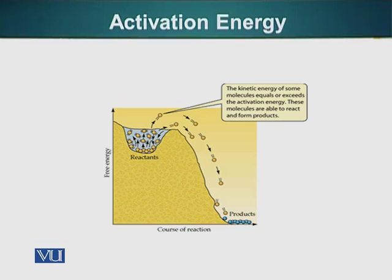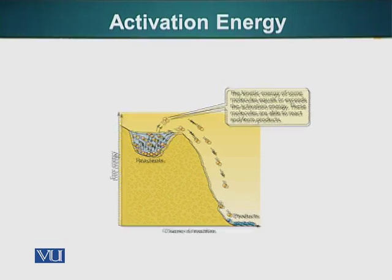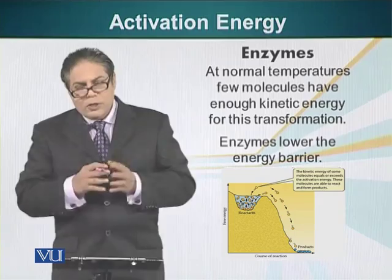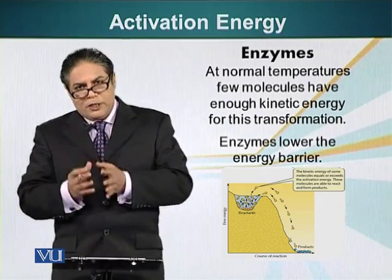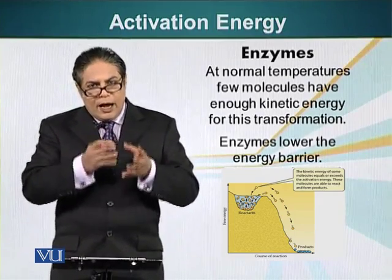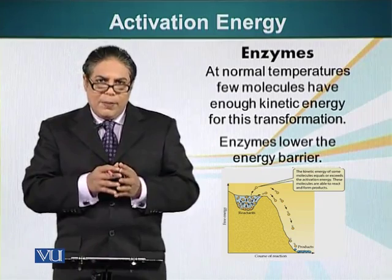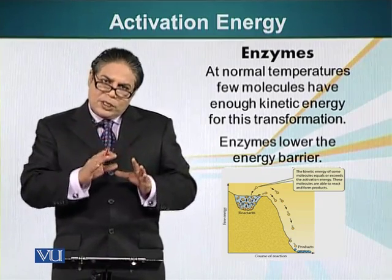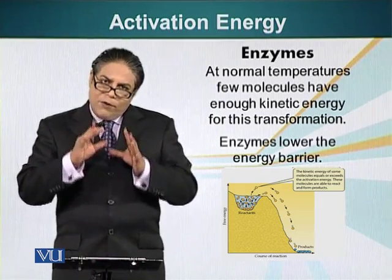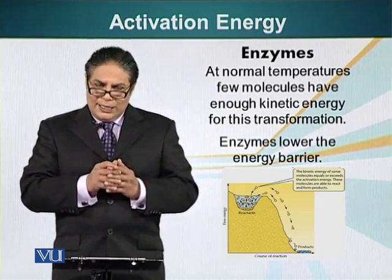As you remember, we also saw the case of glucose 1-phosphate converting into glucose 6-phosphate. The question was: why is it that 5% of the molecules are still at a higher energy level? We said that process is occurring at 25 degrees Celsius.